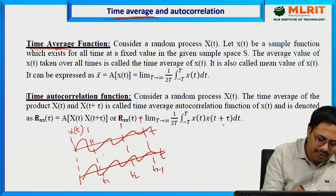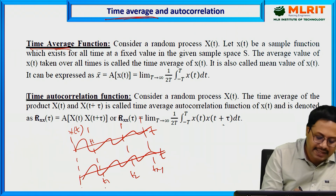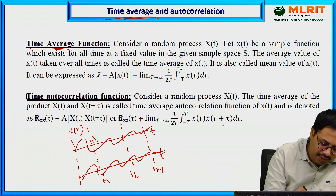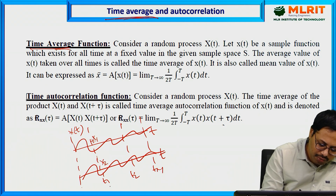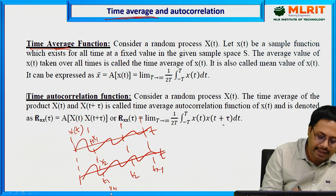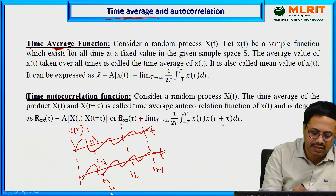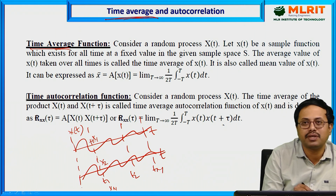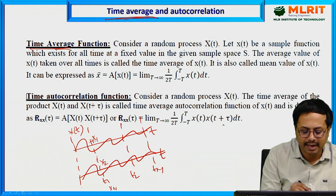Ensemble average means time is fixed, and we are calculating all the instances x1, x2, and so on up to xn. If you are calculating all the instances for a fixed time, that is called ensemble average.